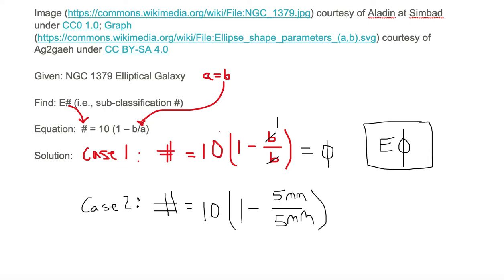I cancel like letters and like numbers. So millimeters cancels with millimeters, 5 cancels with 5. And then you have top and bottom canceling out and that just gives you a 1. Once again, 1 minus 1 is 0, 10 times 0 is 0, and your number still is equal to 0. So the galaxy classification is still E0.